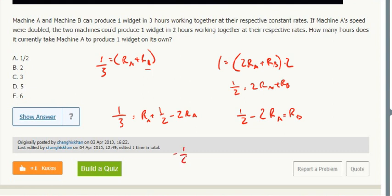So negative one sixth equals negative RA, so one sixth is the rate of A. Okay, so that means to do one widget, how long would A take to produce one widget? At this rate of one sixth, that time is six.